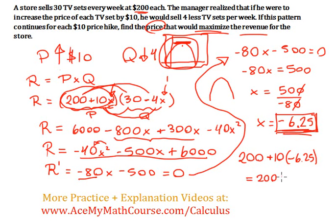So 10 times negative 6.25 is negative 62.5, and 200 minus 62.5 is equal to $137.50. And this is the price that maximizes the revenue.